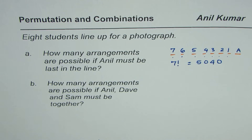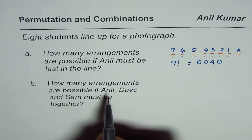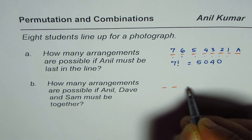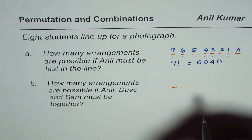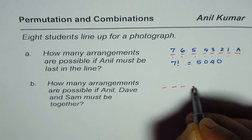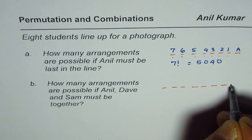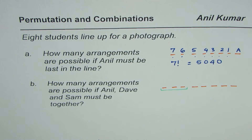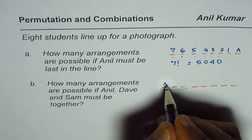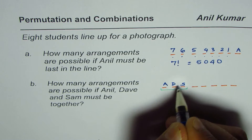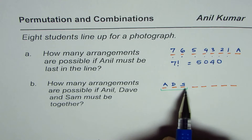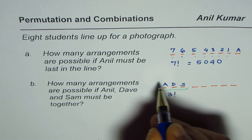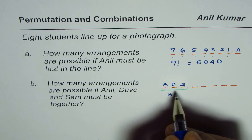Now in part B, how many arrangements are possible if three persons must be together? Basically, three persons — in our case Anil, Dave, and Sam (ADS) — are together. The ways in which these three can be arranged among themselves is three factorial.